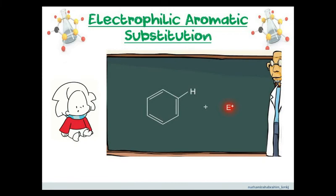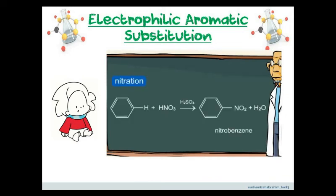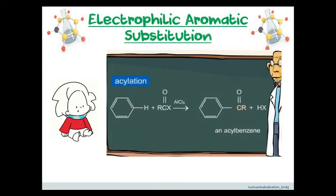The key step of each substitution reaction is attack by an electrophile on the aromatic ring, leading to the replacement of a hydrogen atom in the ring with another atom or group of atoms. Such a reaction is referred to as electrophilic aromatic substitution. The electrophile can be a positively charged ion, E+, or any other particle deficient in electrons.